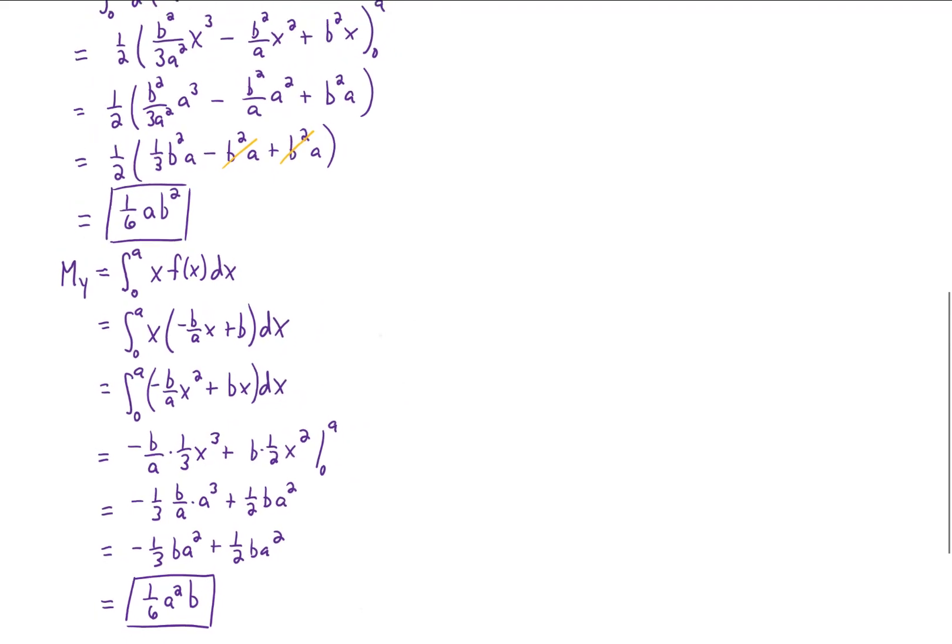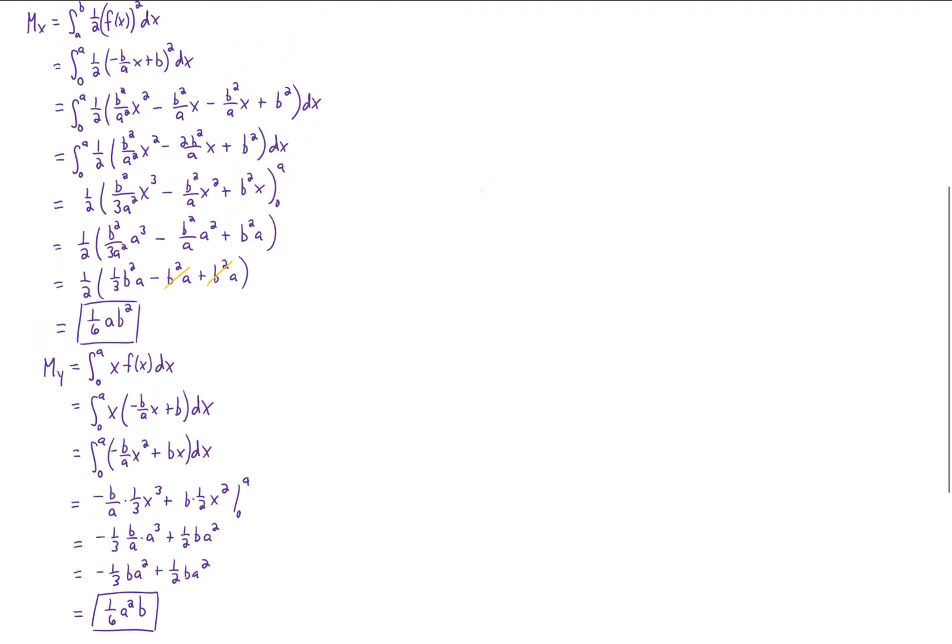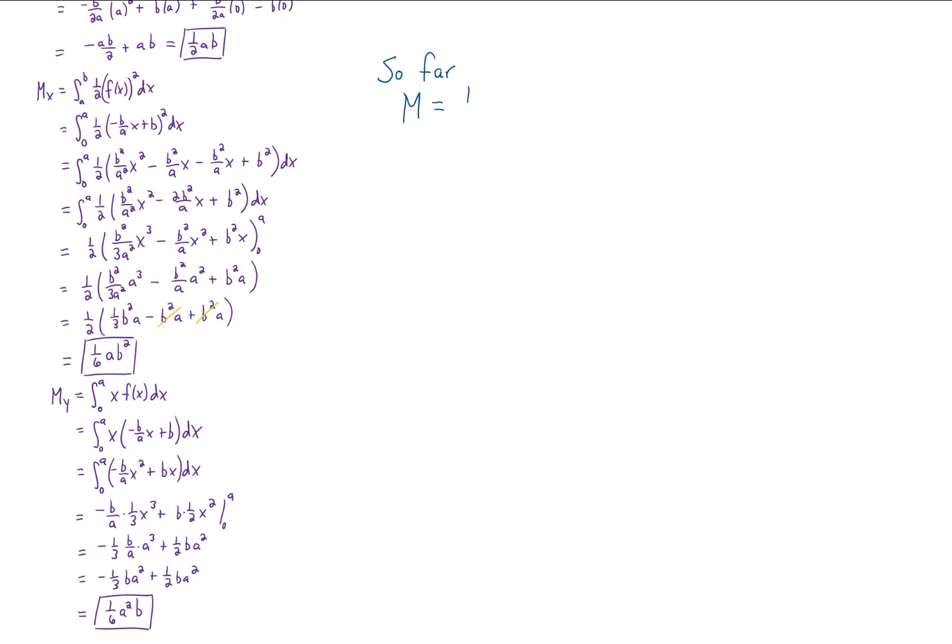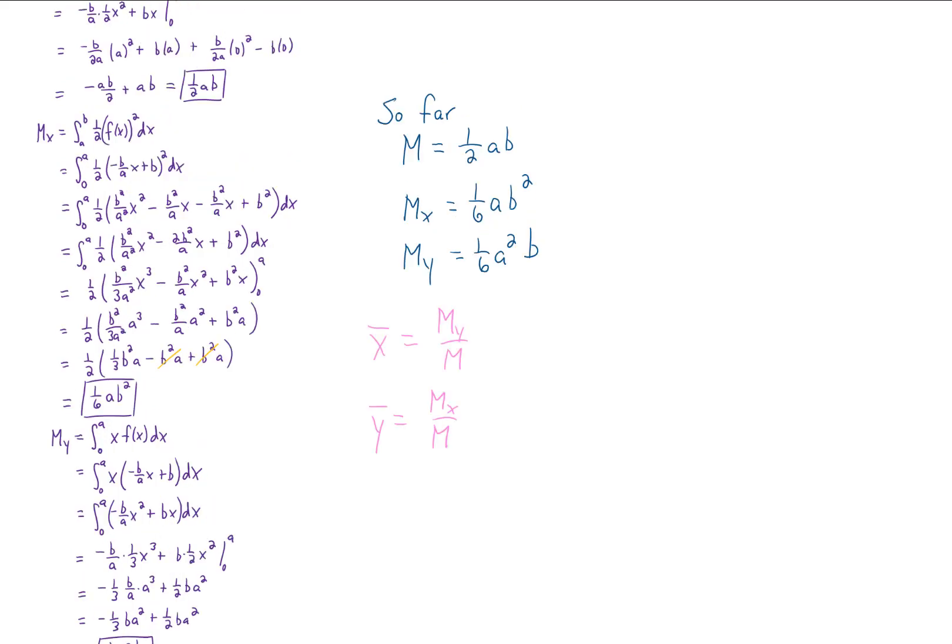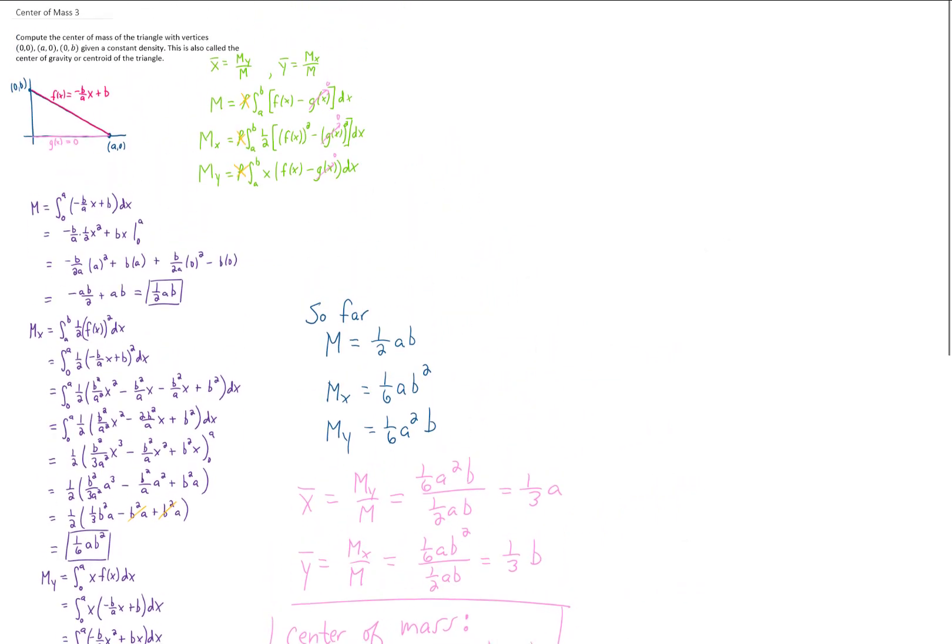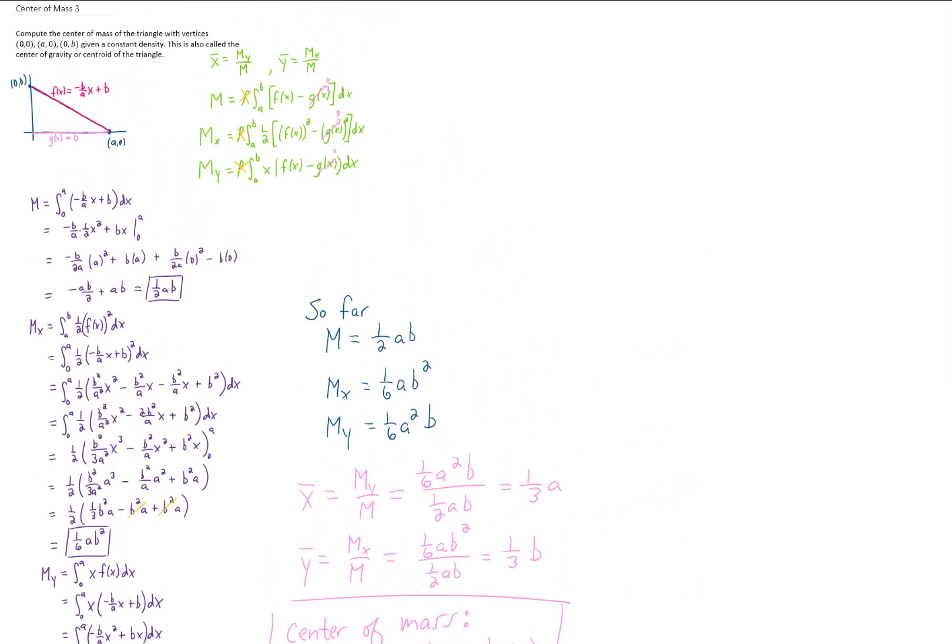I'm going to zoom out just a little bit here and do a quick summary of the values that we found so far. It looks like we found that our mass was 1/2 ab, our M sub x is 1/6 ab squared, and our M sub y is 1/6 a squared b. Now recalling from the very beginning of the problem that the x value of our center of mass is just M sub y over M, doing just a little bit of calculation gives us 1/3 a for our x coordinate, and for our y coordinate, I'm getting 1/3 b, which is actually pretty interesting. It's going to be the final answer. I don't know if I can zoom out on this whole thing, but maybe what I'll do is just go to the top of the problem, scroll down slowly, and you can hit pause on your browser wherever you need to take another look at the math.